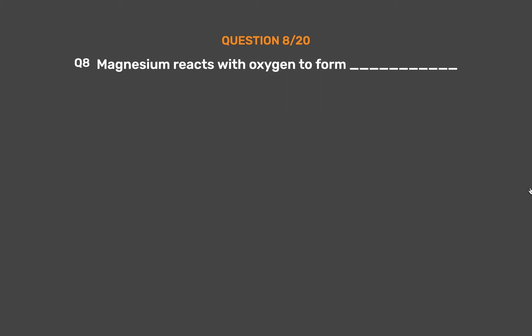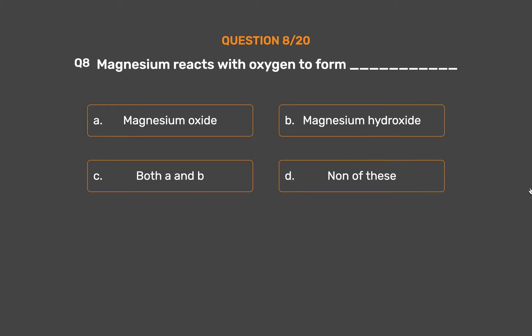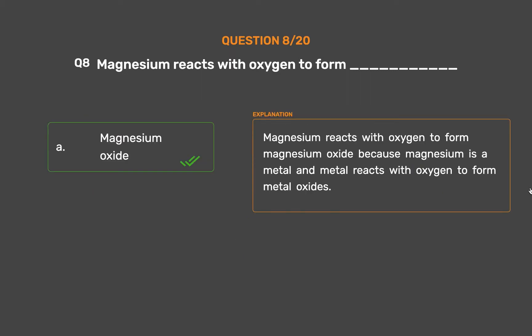Question number 8. Magnesium reacts with oxygen to form ___. Option A: Magnesium oxide. Option B: Magnesium hydroxide. Option C: Both A and B. Option D: None of these. The correct answer is Option A: Magnesium oxide. Magnesium reacts with oxygen to form magnesium oxide because magnesium is a metal, and metals react with oxygen to form metal oxides.